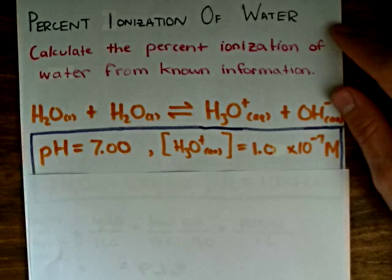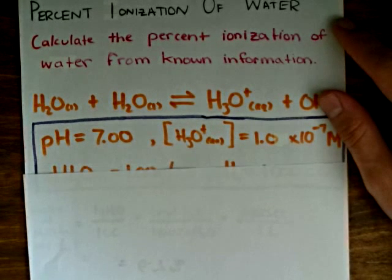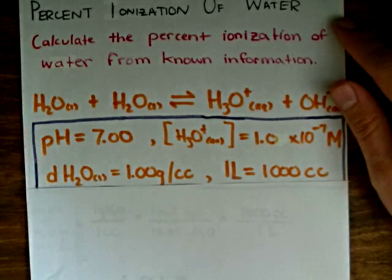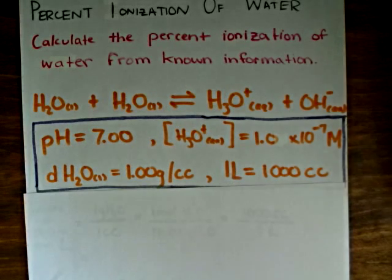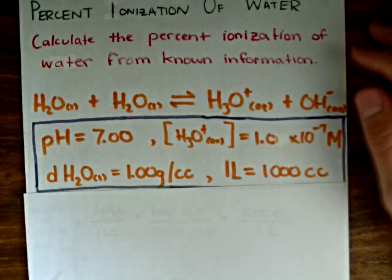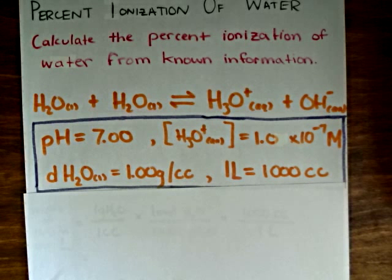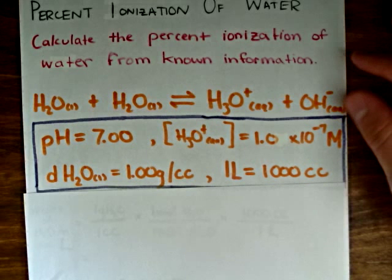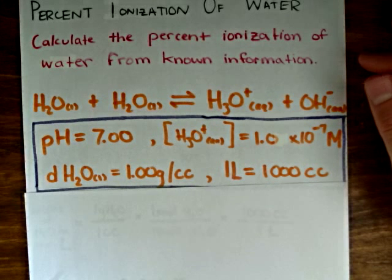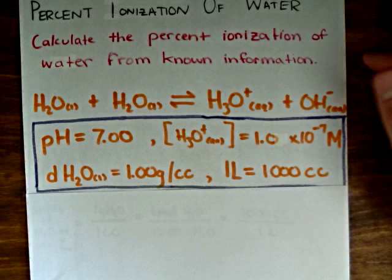We also know that the density of water is equal to 1.00 grams per cubic centimeter, and the conversion factor between liters and cubic centimeters is 1 liter equals 1,000 cubic centimeters. So with this information, we can now calculate the percent ionization of water.